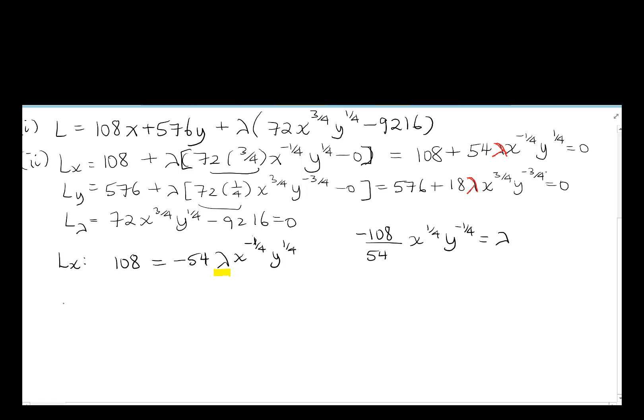And next one here, Ly is going to be 576, -18λx^(3/4)y^(-3/4). Move everything to the left side except for the lambda. So again, we're isolating lambda. And we end up with 576 over 18, make that negative, x^(-3/4)y^(3/4), and that's equal to lambda.